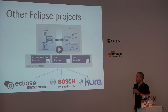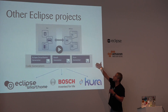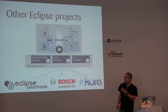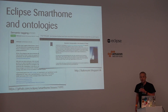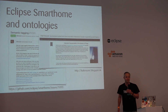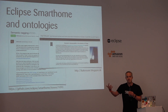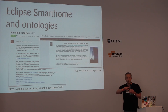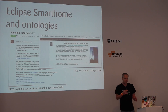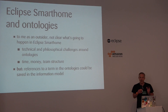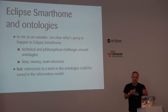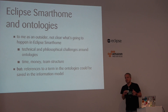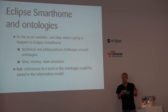There are other Eclipse projects tapping into the Eclipse Vorto ecosystem. One that's definitely worth mentioning is Eclipse Smart Home. Kai Kreuzer, the main pair of hands behind Eclipse Smart Home, has started thinking about how he could use Vorto to manage the different devices that are part of a smart home solution, but also how he could do semantic reasoning — so if you have a thermostat, you can infer that somebody might want to control a boiler. To me as an outsider, it's not quite clear what's going to happen with Eclipse Smart Home, because there are a lot of technical and philosophical challenges around building ontologies. Ontology development is hard to do right — it's a time, money, and team structure problem.